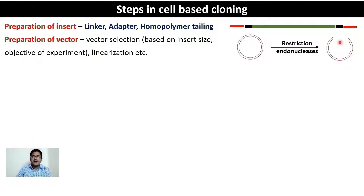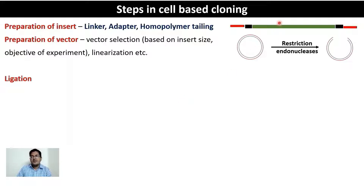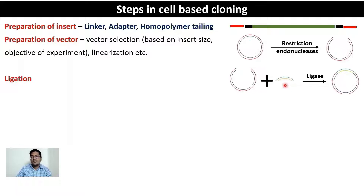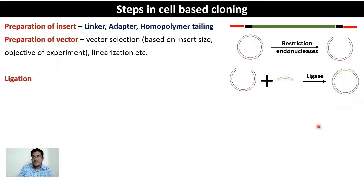Modifications to naturally occurring vectors are made to ensure any type of insert can be accommodated. The next step is ligation — opening your vector and stably integrating the insert via phosphodiester bonds. You have your opened vector and the insert, which is accordingly modified for efficient ligation. Using ligase, you get a recombinant vector, which is a vector into which the insert is stably integrated.